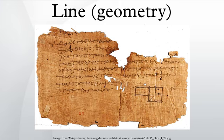Euclidean space: in three-dimensional space, a first-degree equation in the variables x, y, and z defines a plane, so two such equations, provided the planes they give rise to are not parallel, define a line which is the intersection of the planes. More generally, in n-dimensional space, n−1 first-degree equations in the n coordinate variables define a line under suitable conditions. In more general Euclidean space Rⁿ, the line passing through two different points A and B is a specific subset, and the direction of the line is from A to B. Different choices of A and B can yield the same line.